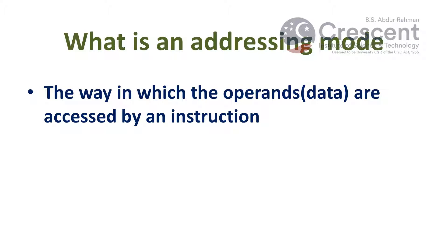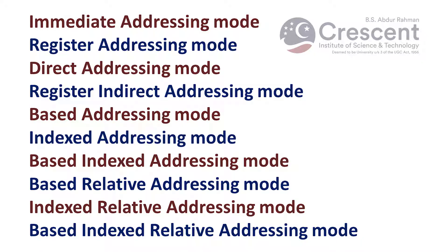The different types of addressing modes are: immediate addressing mode, register addressing mode, direct addressing mode, register indirect addressing mode, based addressing mode, indexed addressing mode, based indexed addressing mode, based relative addressing mode, indexed relative addressing mode, and based indexed relative addressing mode.